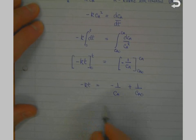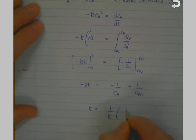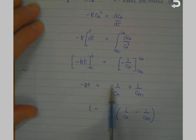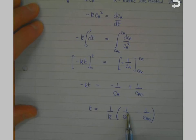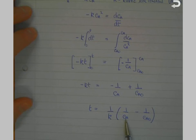You have to watch the minus signs here. Collecting terms and taking the minus sign across, we get T equals 1/K multiplied by 1/CA minus 1/CA₀. This gives the required reaction time to react from a starting concentration of CA₀ to an end concentration of CA.